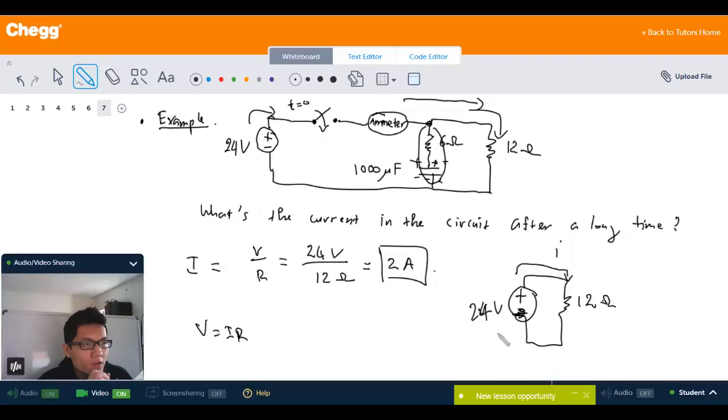So eventually we have something like this: 24 volts and 12 ohms here. So using Ohm's law V equals IR, you can find the current, and this is equal to 2 amperes.